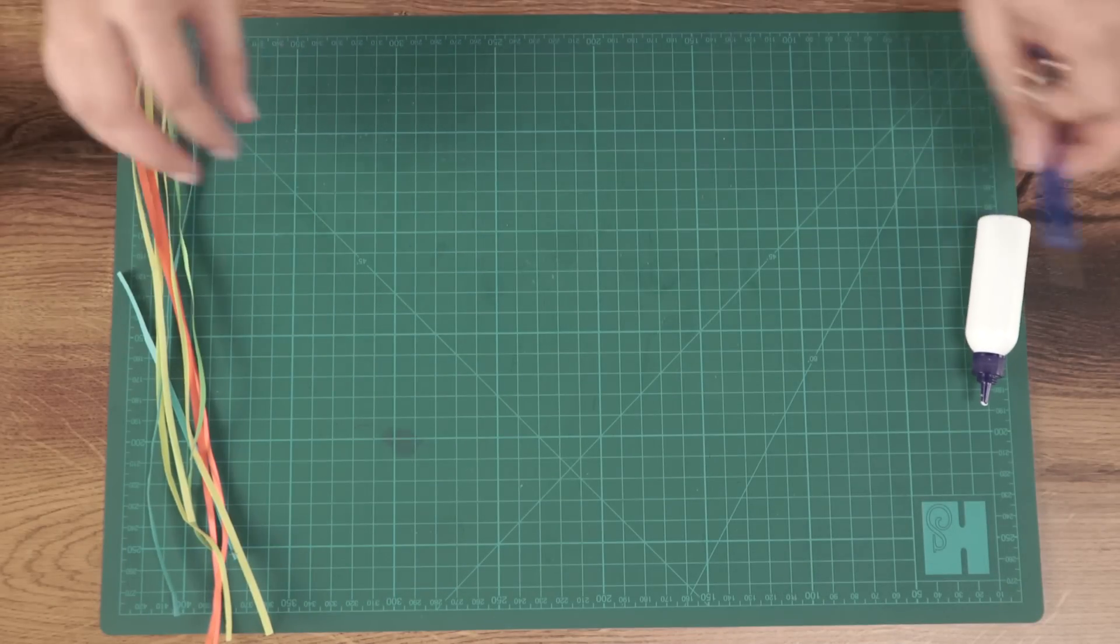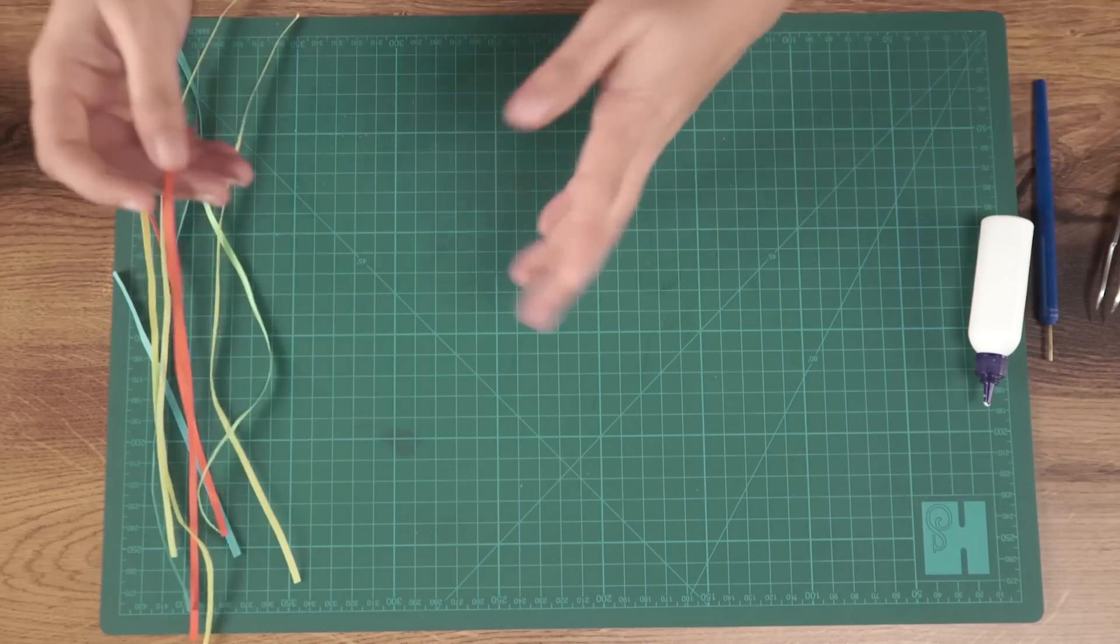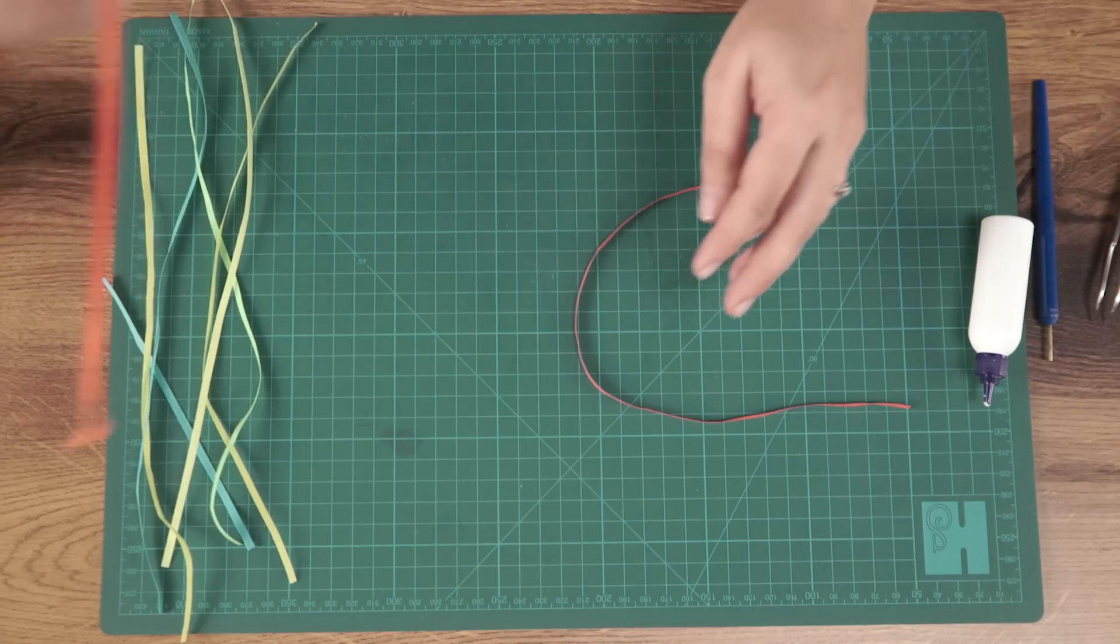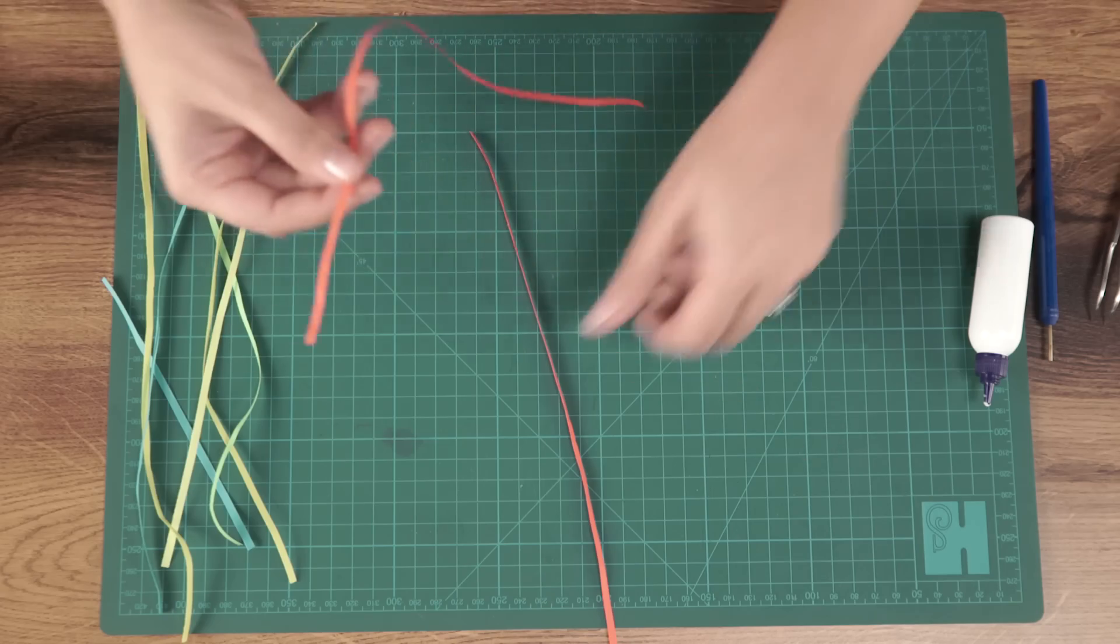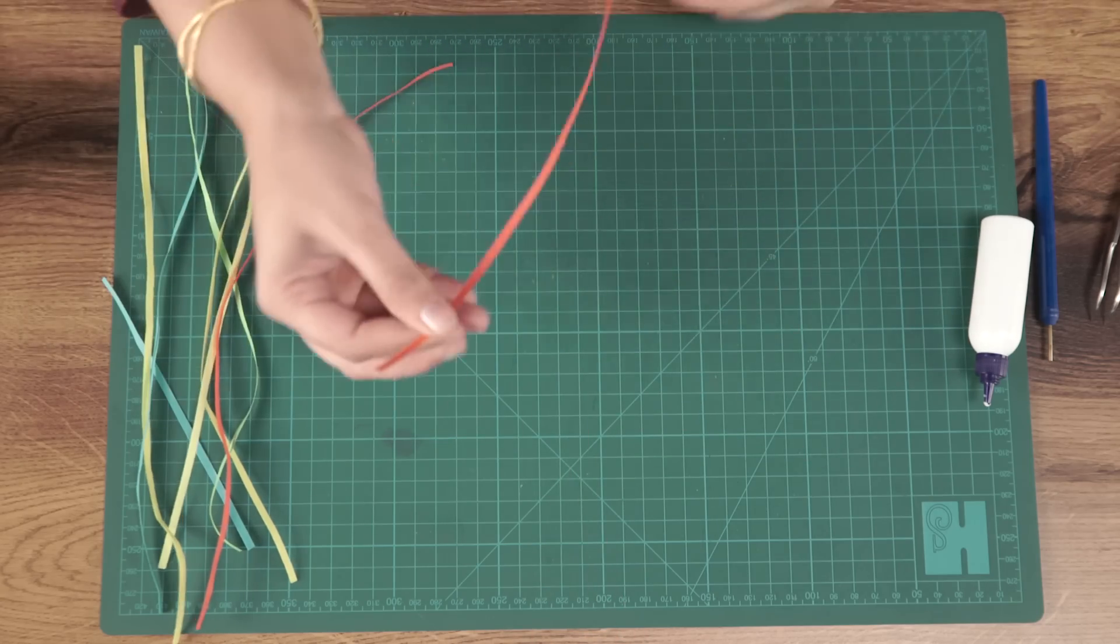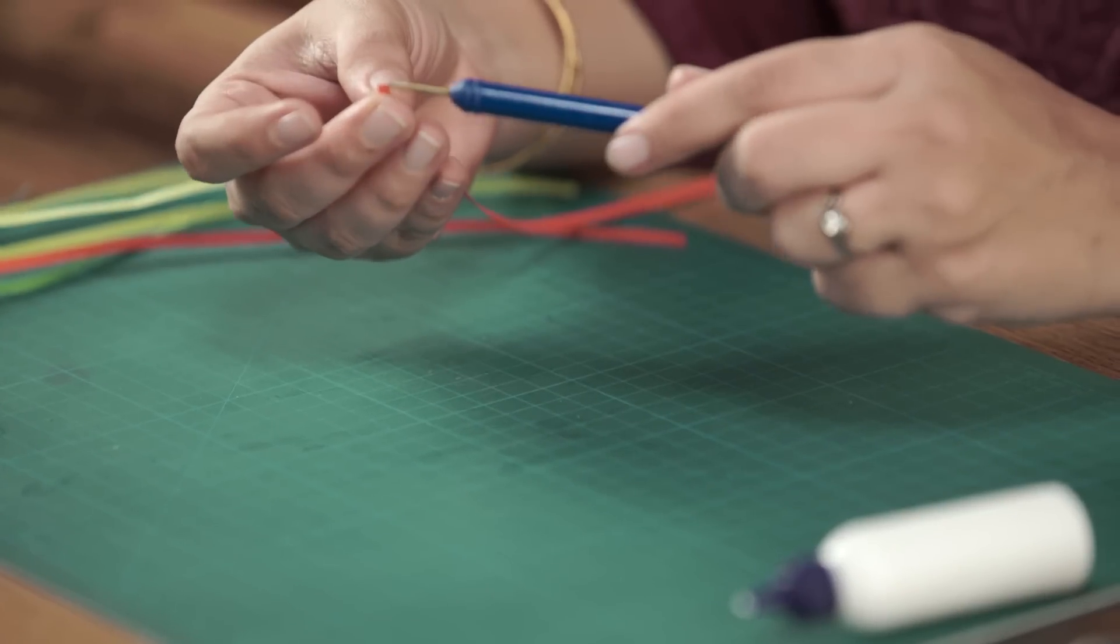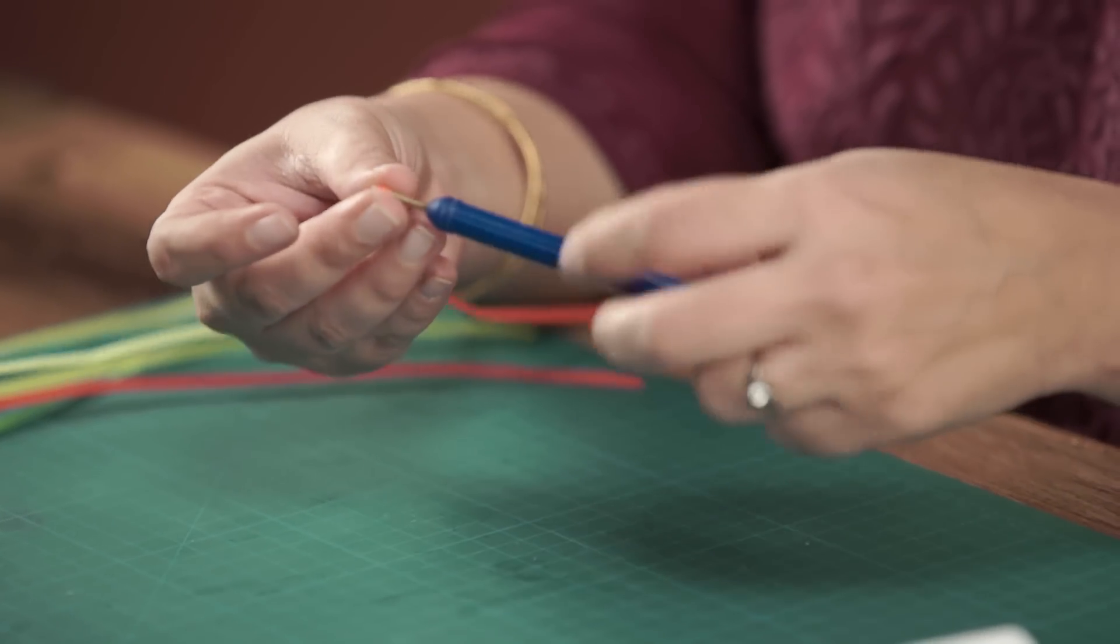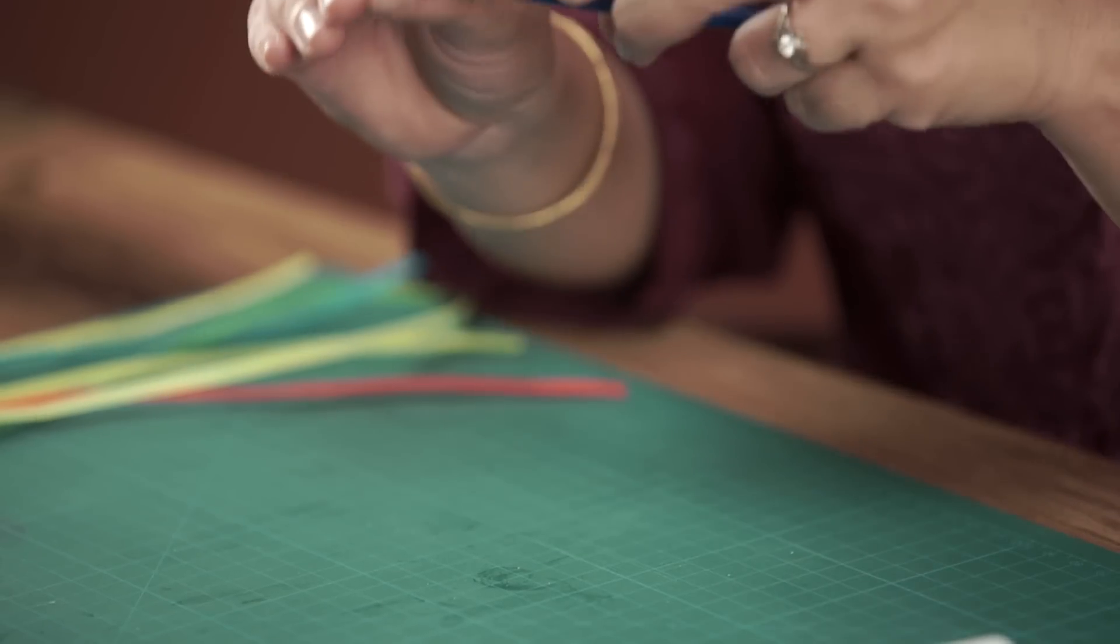So let's start. The flower I'm going to be making is red in color, so we're working with red strips of paper. What you do is you start rolling. This is a little intricate.